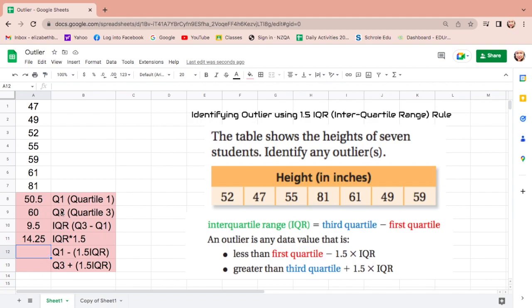We will subtract Q1, 50.5, minus the value of IQR times 1.5. Equals, Q1 is 50.5, click, minus, IQR times 1.5 is 14.25, click, and then enter.